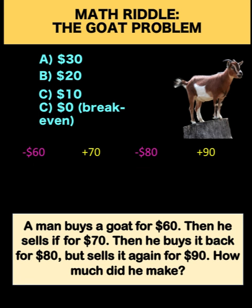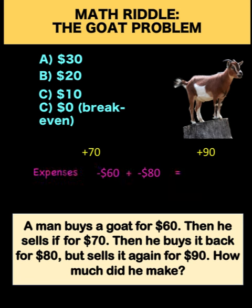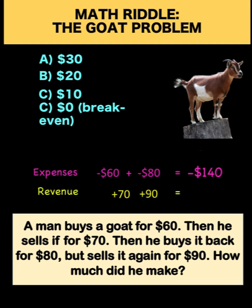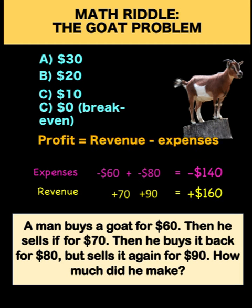To reiterate our answer: the answer is $20. To analyze this, just add together all the expenses — that equals $140 — then add all the revenues — that equals $160 — and subtracting revenue minus expenses gives us a profit of $20. Thank you very much, and we hope to see you again in our next video. Bye for now.